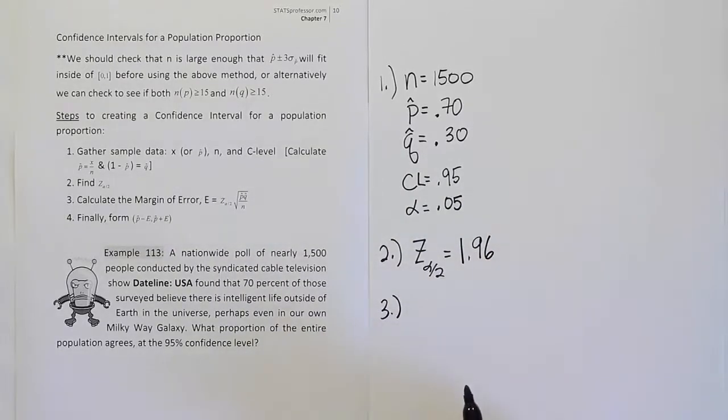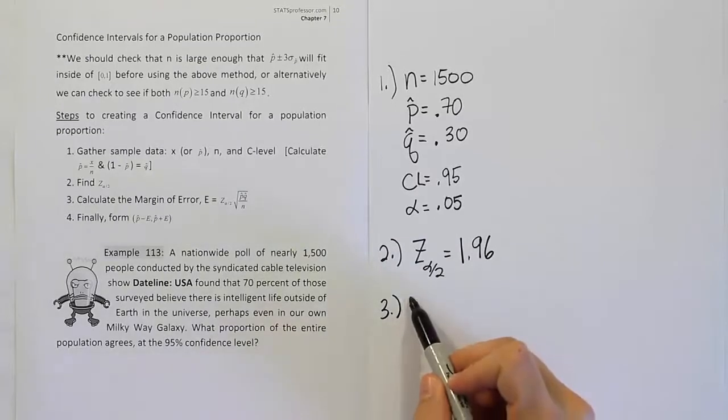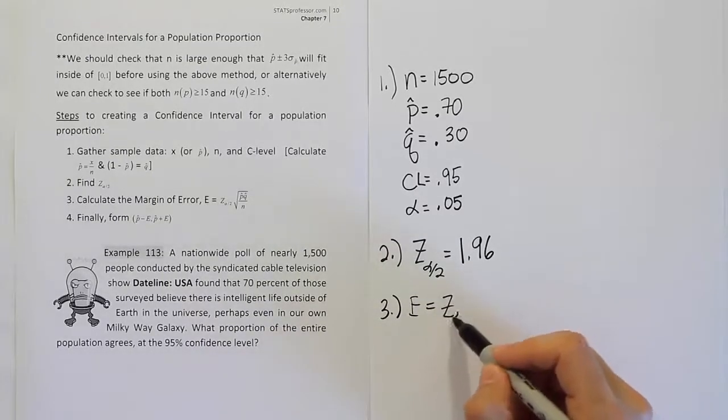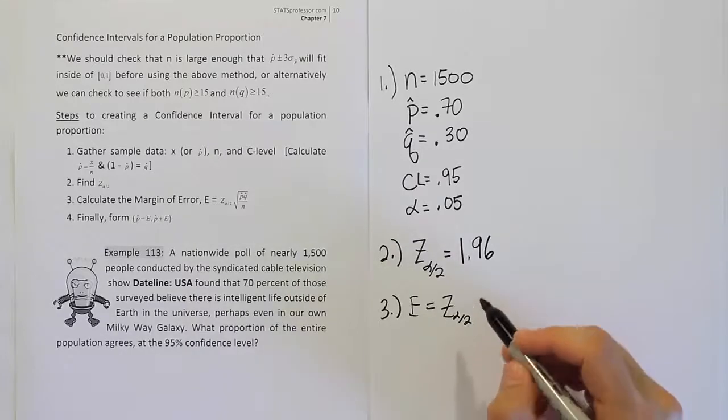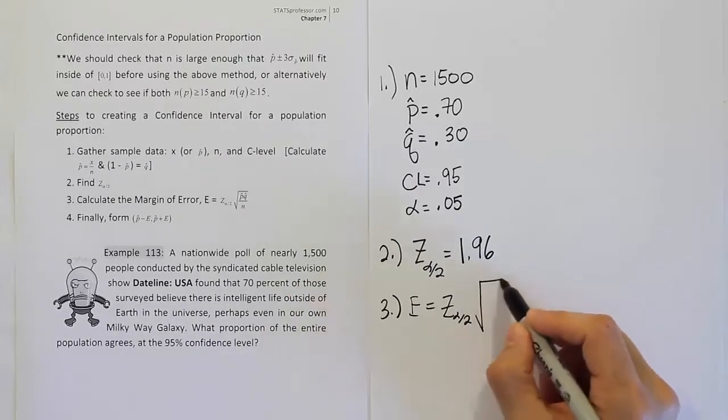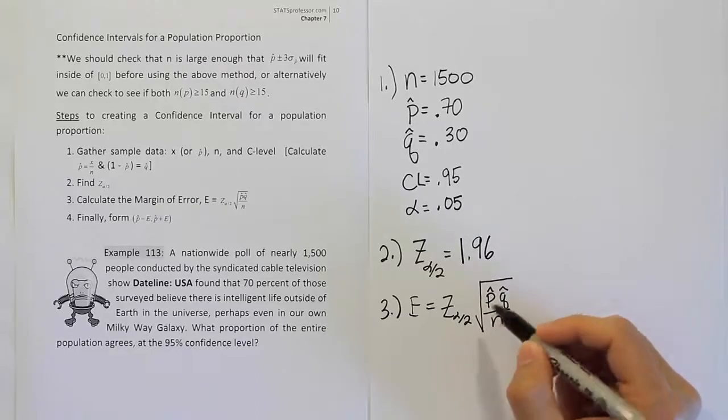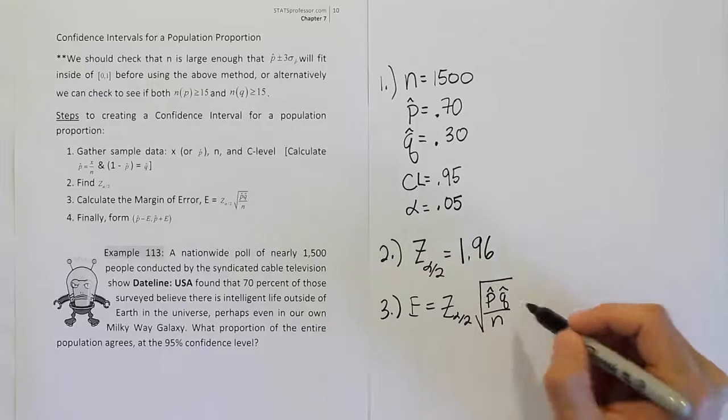In step 3, we want to fill in the margin of error. The margin of error is simply e equals z alpha divided by 2. And you're going to have the square root after that. The square root is p-hat times q-hat over n. Now all of that is in the square root, so be careful with that.